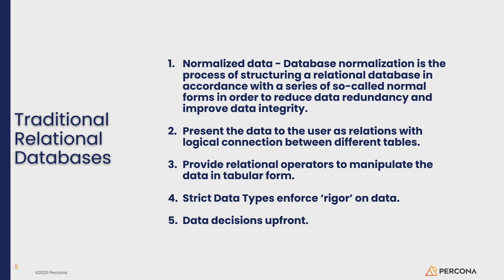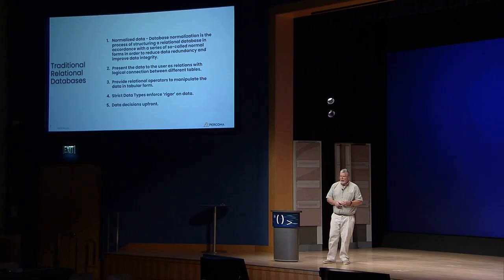Traditional relational databases featured normalized data. This is where you broke down everything into logical parts for consumption. It's usually put into tables, and you get nice operators like joins to link things like a customer ID to a shipping address. Part of this is strict data types that let you have some rigor on your data. It's easier to keep bad data out than to fix it later, and you have to make decisions up front on what your data is going to look like.